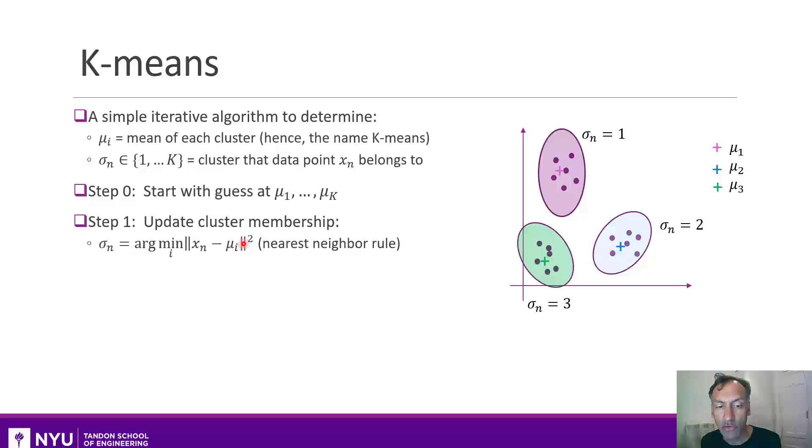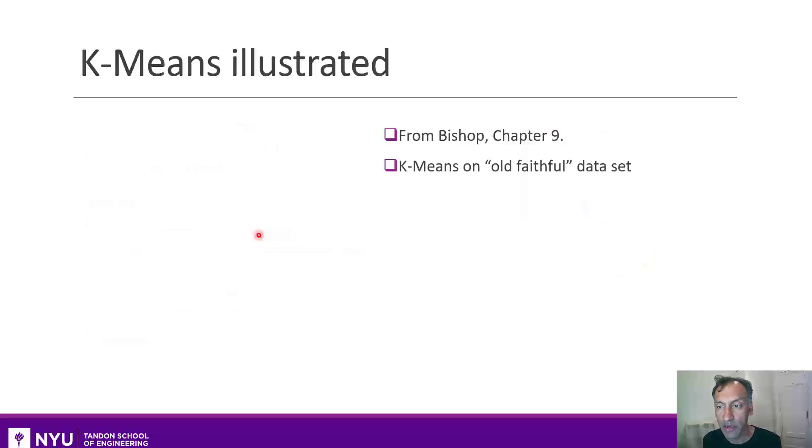Once you've got the memberships, then you re-update the means of the cluster by selecting the centroid within each cluster. That is the centroid among the points that are selected to the same cluster. And then, you just keep on repeating steps 1 and 2 until it converges. So, that was it in math. Let's take a look in pictures.